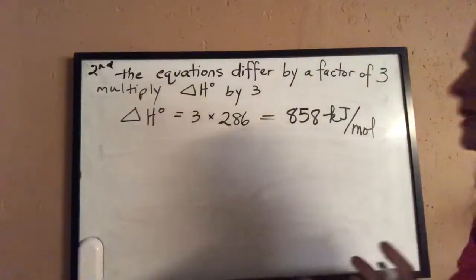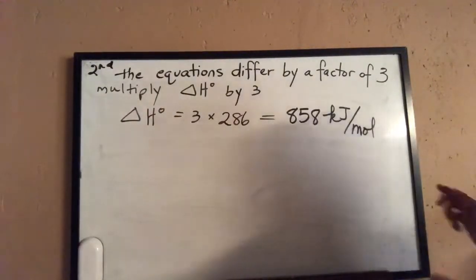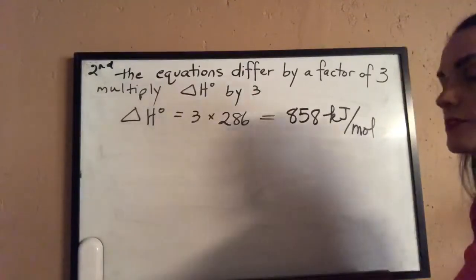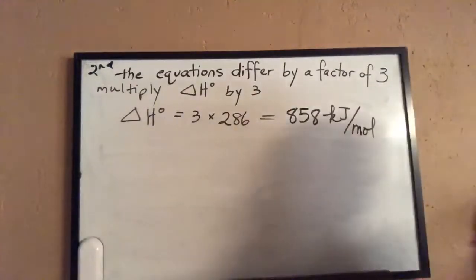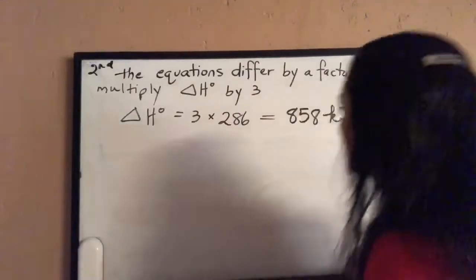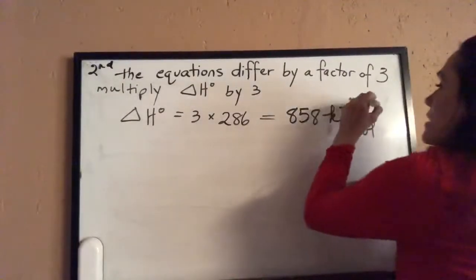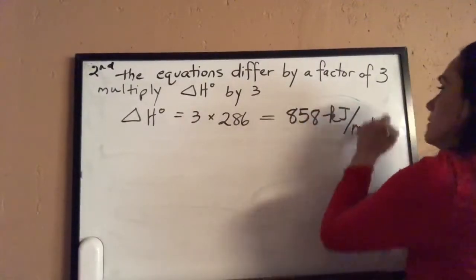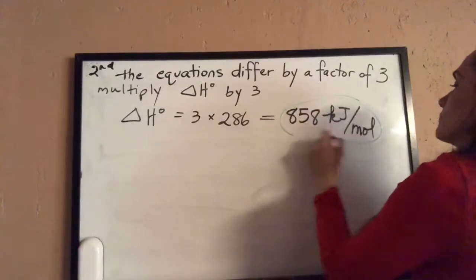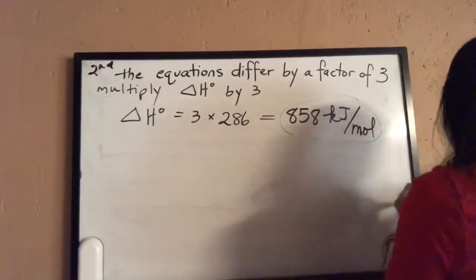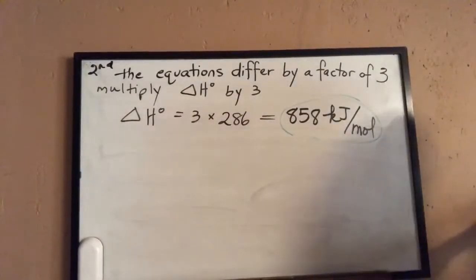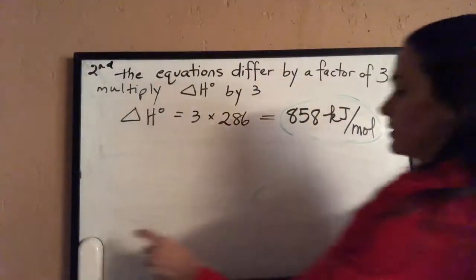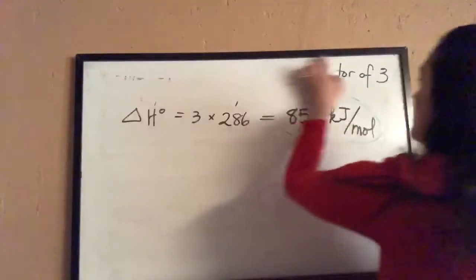Now let's look at an example that involves canceling like reactants and products — a slightly different situation that brings in that other step. Let me erase the board so we have room for example two.